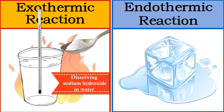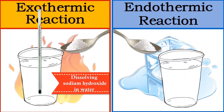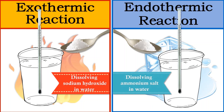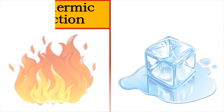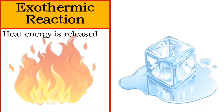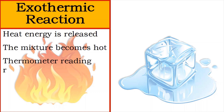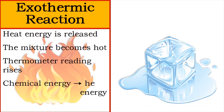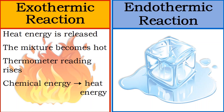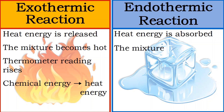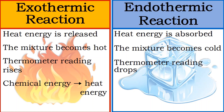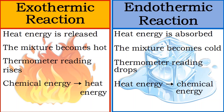All these steps are repeated to study the endothermic reaction by dissolving ammonium chloride solid into water. When an exothermic reaction occurs, heat is released to the surroundings. The reaction mixture and the container become hot, and the temperature of the reaction mixture rises — chemical energy is converted into heat energy. When an endothermic reaction occurs, heat energy is absorbed and transferred to the reactants. The reaction mixture and the container become cold, and the temperature of the reaction mixture falls. The heat energy is now converted into chemical energy.